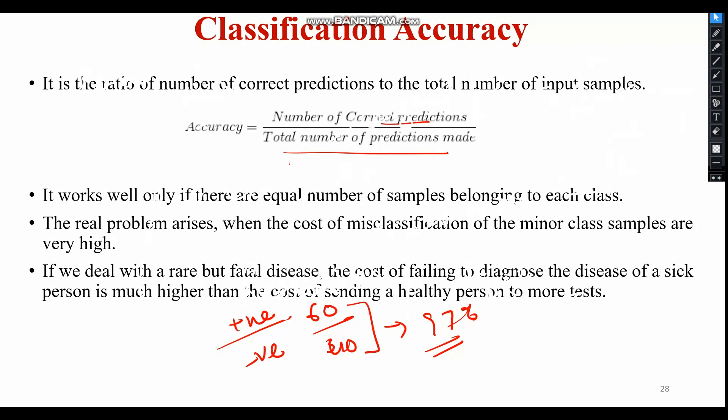It is recommended not to use the accuracy measure when the target variable majority belongs to one class. For example, in a disease prediction model where out of 100 people only 5 have the disease and 95 do not, the accuracy will drop to 95%, which is not at all acceptable as a meaningful measure.